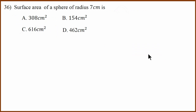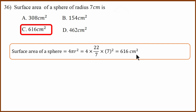Thirty-sixth question: surface area of a sphere of radius 7 centimeters. The formula is 4 pi R squared. Substituting R equals 7 and simplifying gives 88 times 7, which is 616 square centimeters.